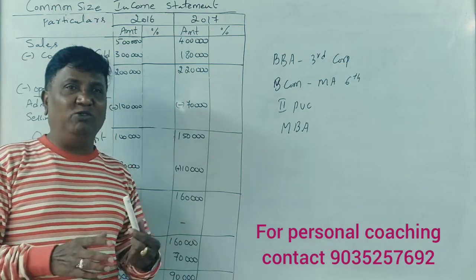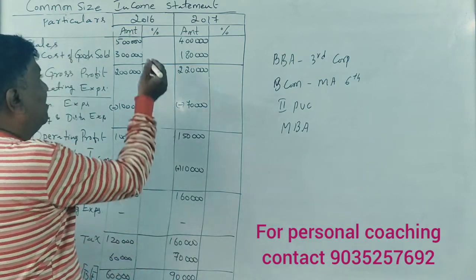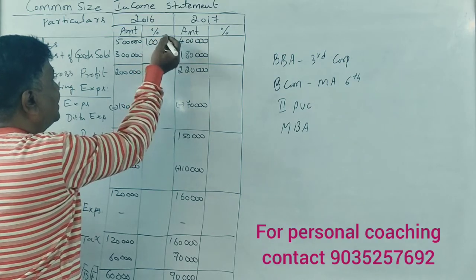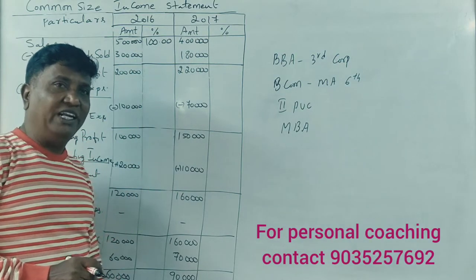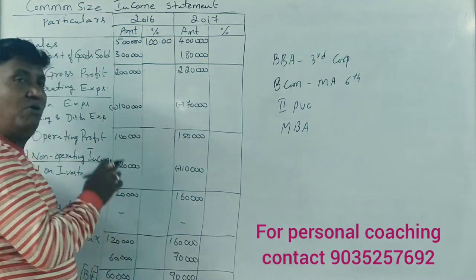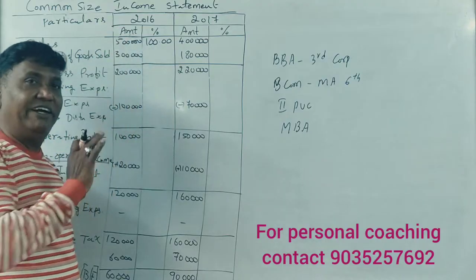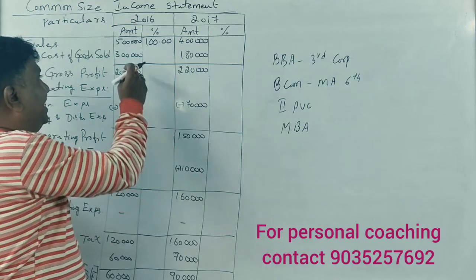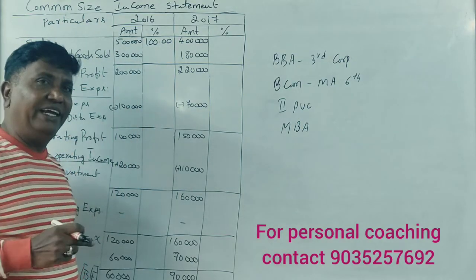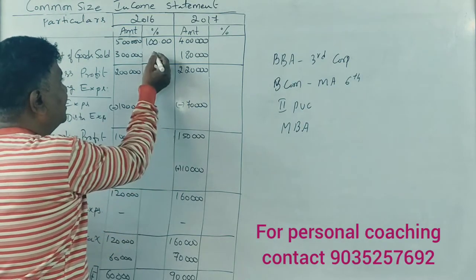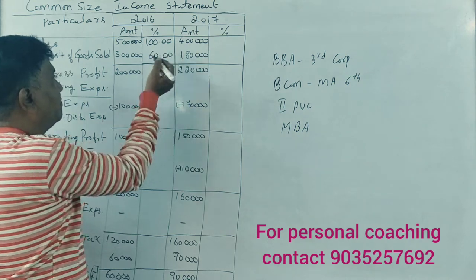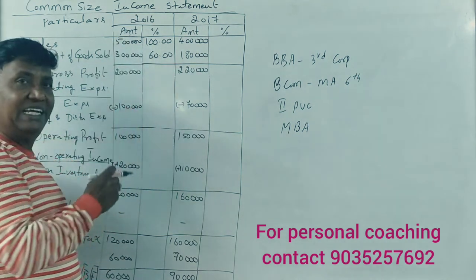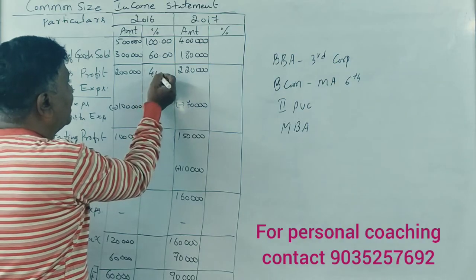In business, sales is very important. In the common size income statement, sales is taken as 100%. All items are expressed as a percentage of sales. For example, cost of goods sold: 3 lakhs divided by 5 lakhs equals 60%. Gross profit: 2 lakhs divided by 5 lakhs into 100 equals 40%.